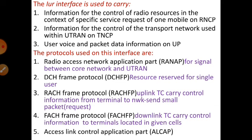Next we are going to see the important protocols. First will be RANAIP, which stands for Radio Access Network Application Part. This protocol is mainly used for the signaling process between the core network as well as the UTRAN. Second will be DCHFP. This protocol will allocate resources for a single user and not for multiple users.